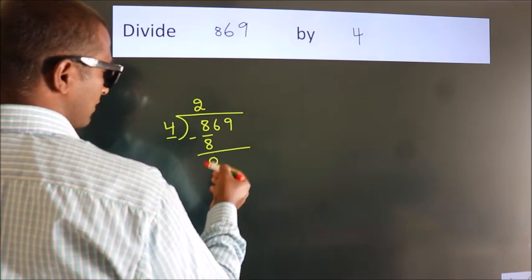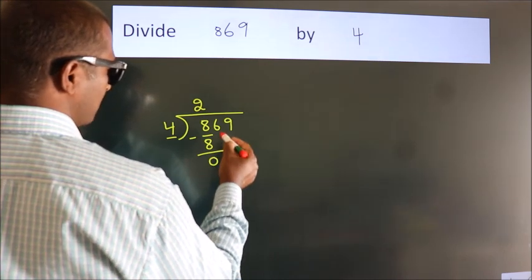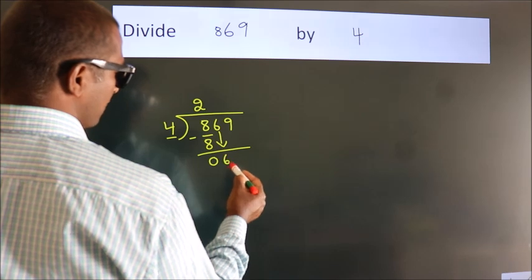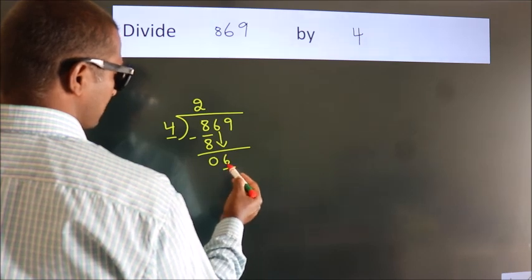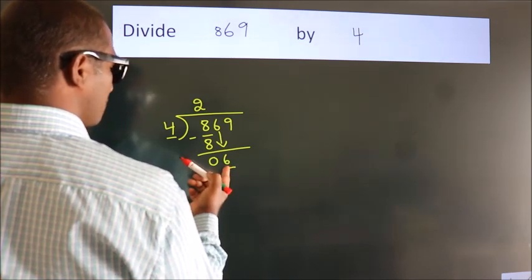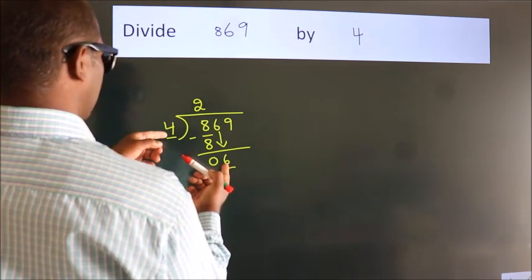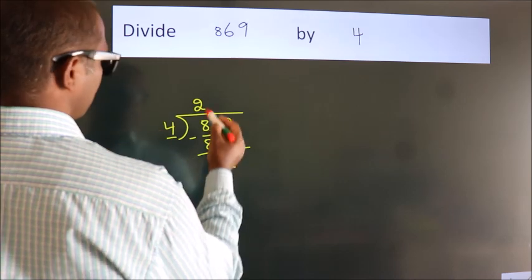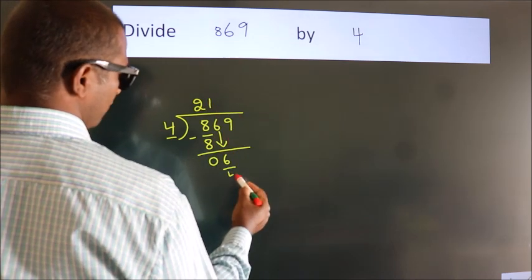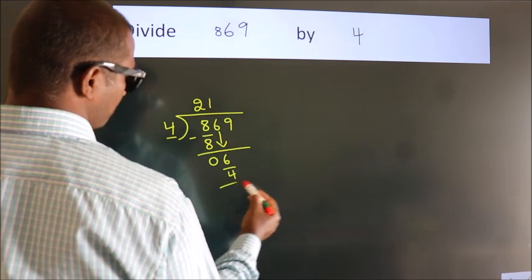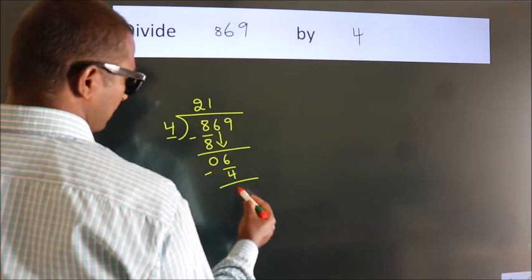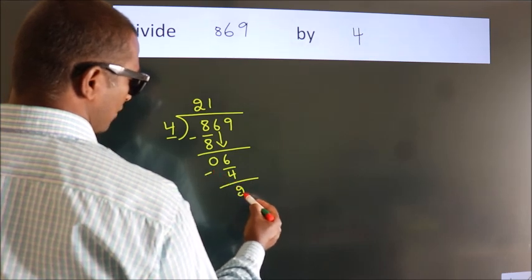After this, bring down the beside number — so 6 comes down, giving us 6. A number close to 6 in the 4 times table is 4 ones, which is 4. Now we subtract, and we get 2.